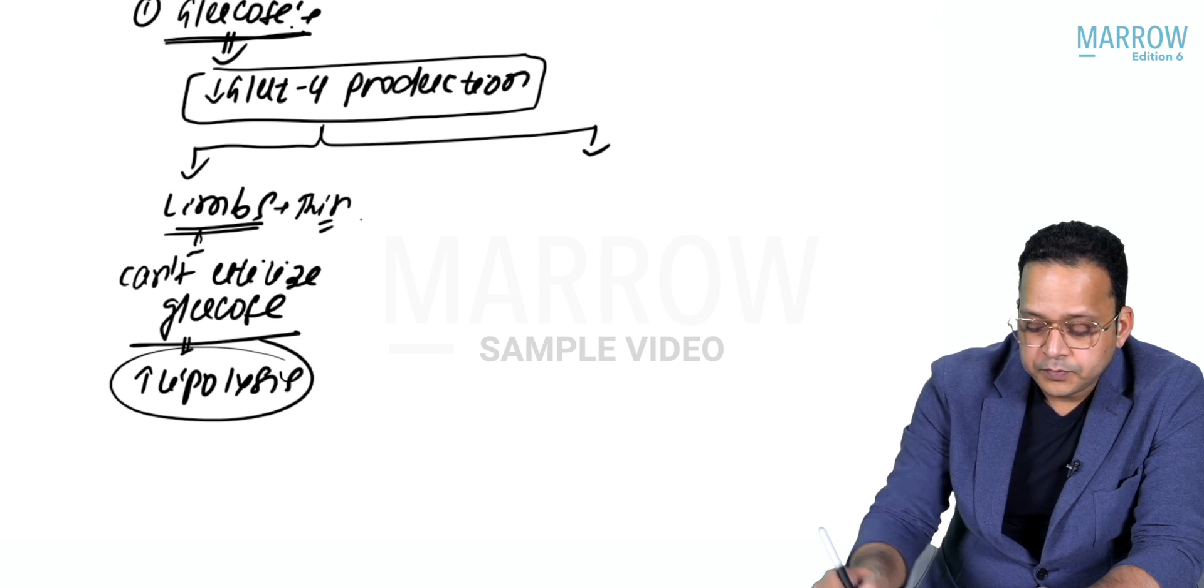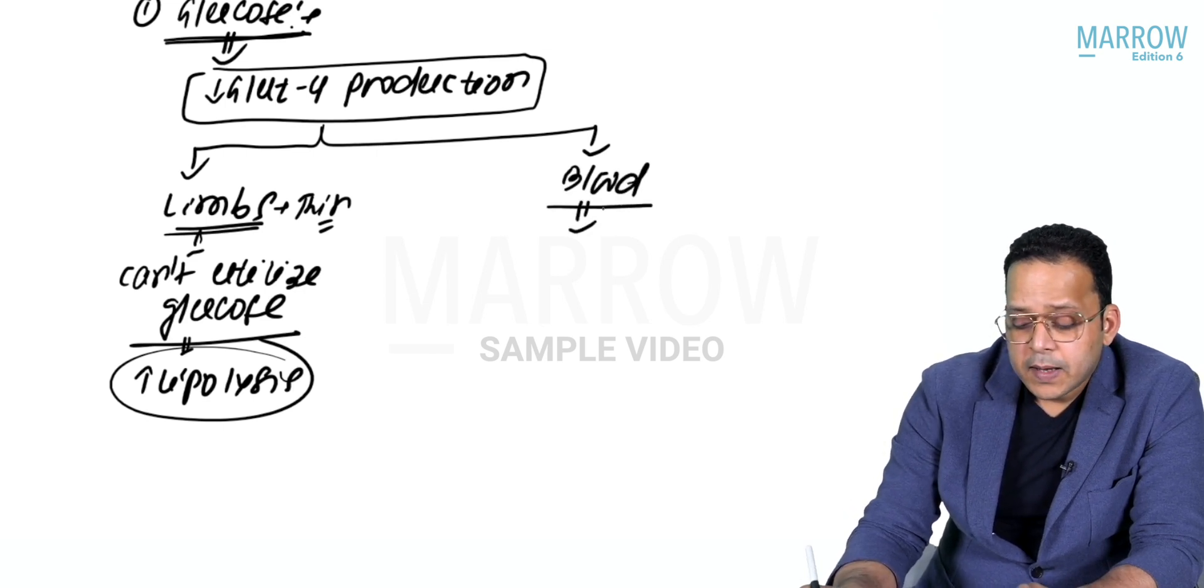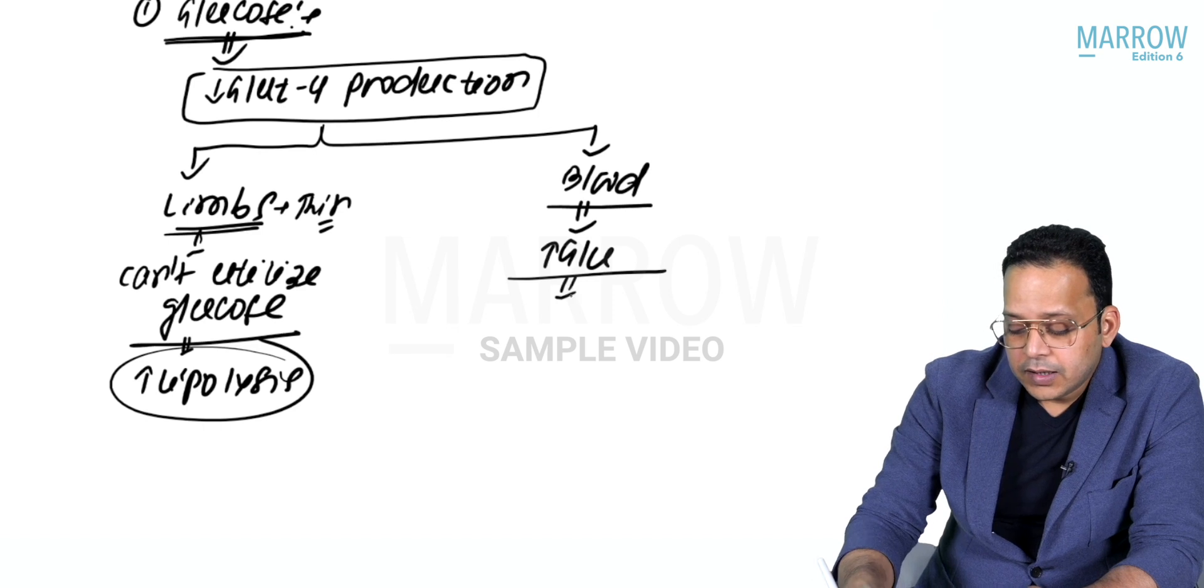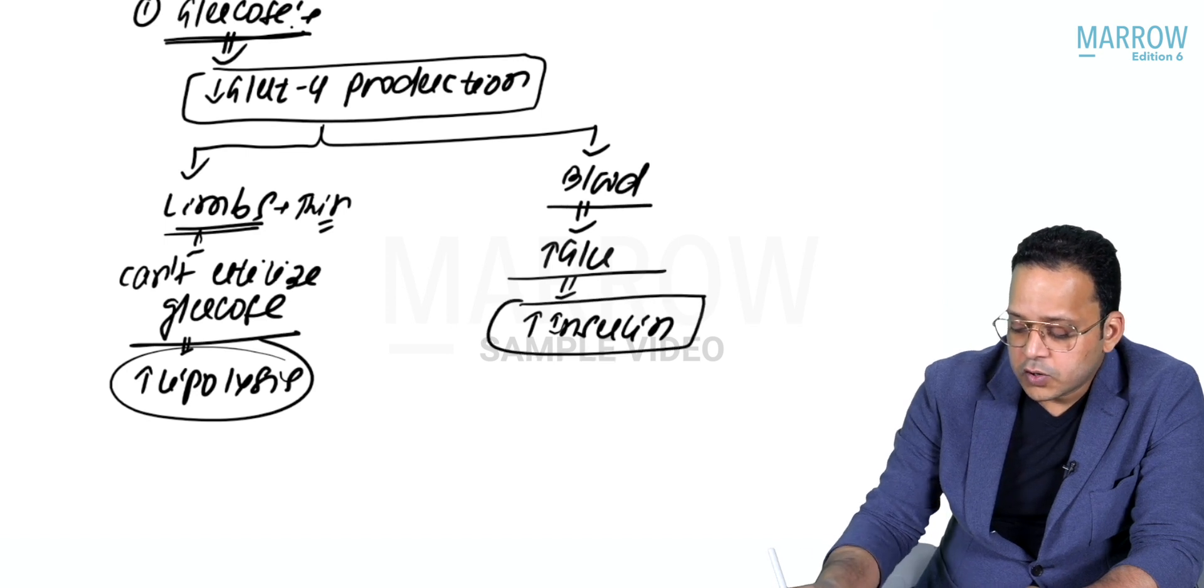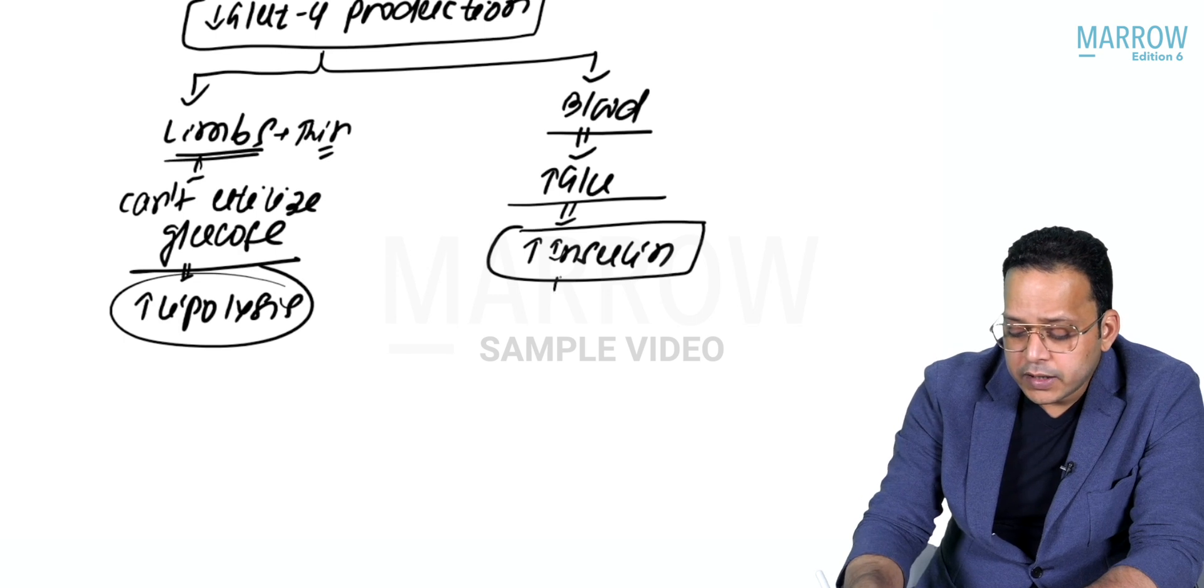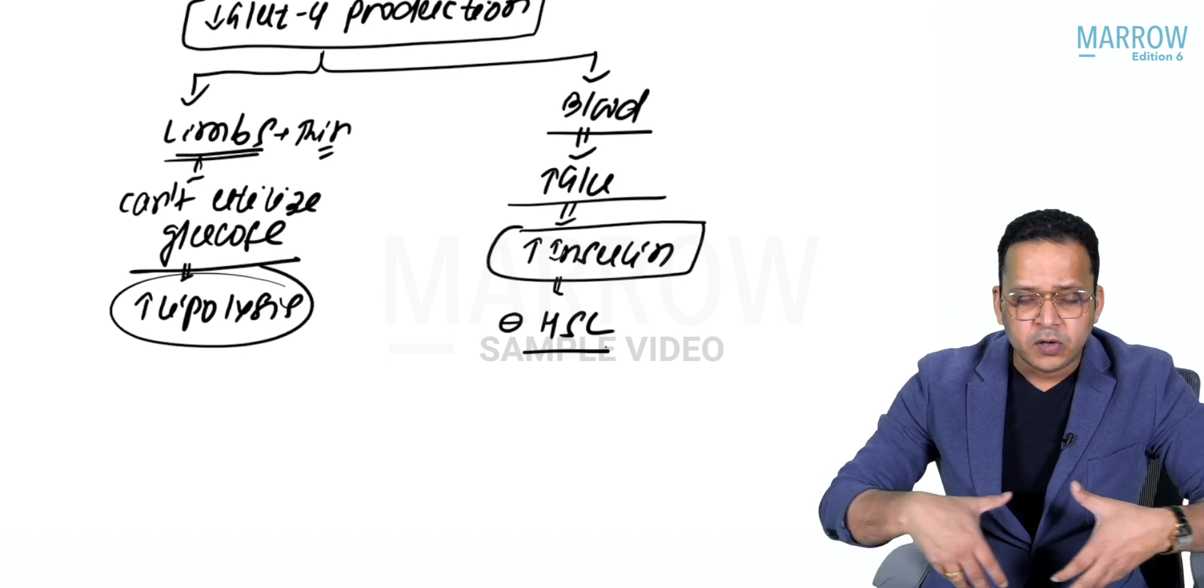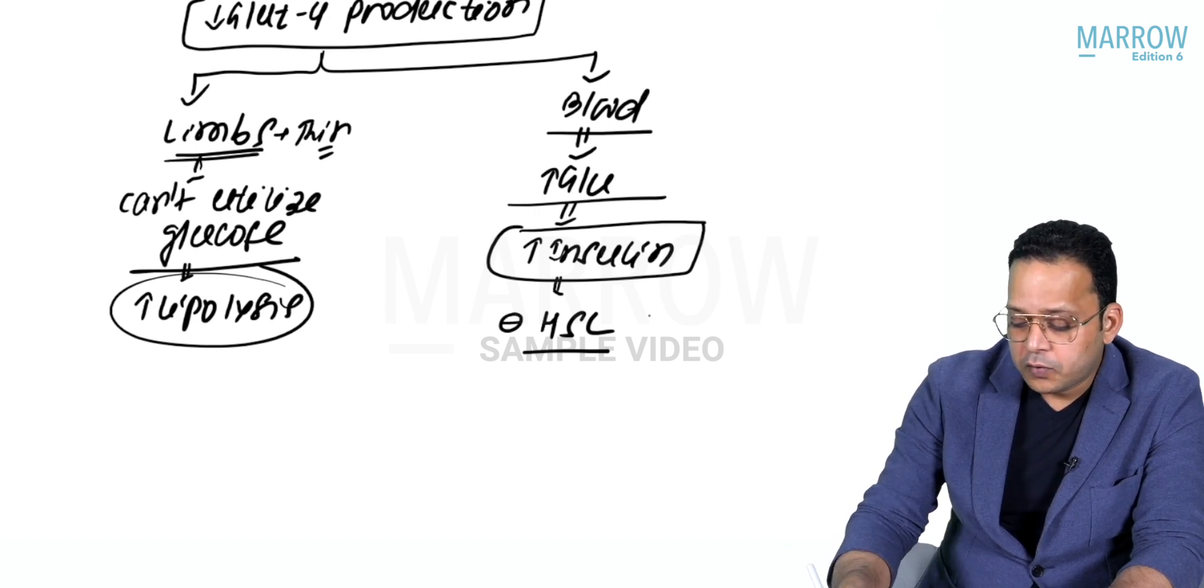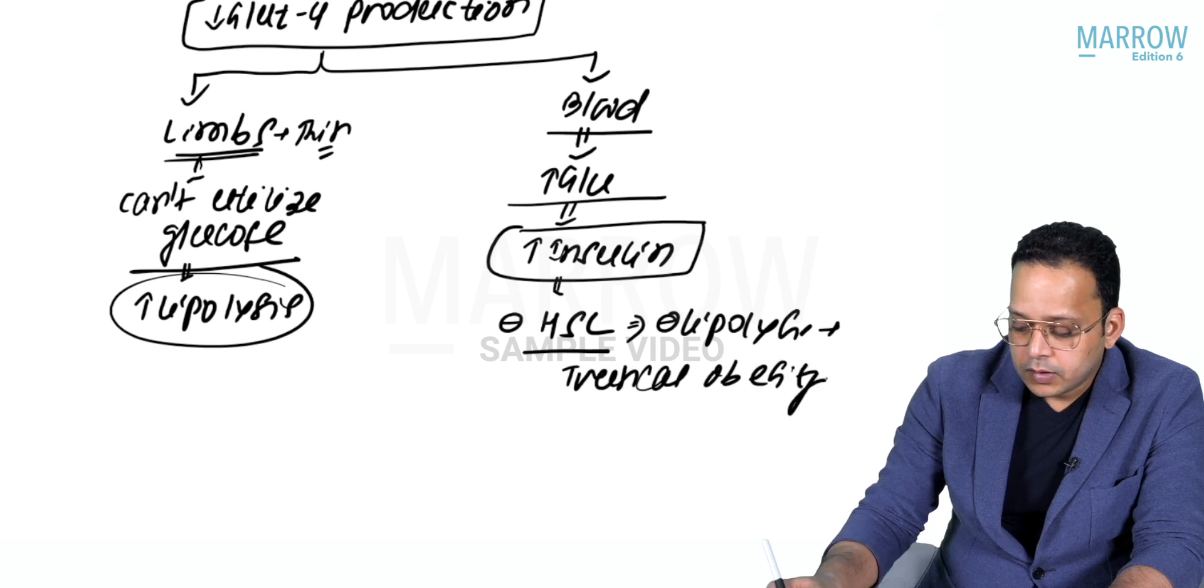What happens in my blood? Because GLUT4 production decreases, there would be increased glucose, which means increased insulin. There will be a condition of hyperinsulinemia. Insulin blocks an enzyme called HSL - hormone sensitive lipase - which is responsible for lipolysis in your trunk. This block of lipolysis causes truncal obesity.